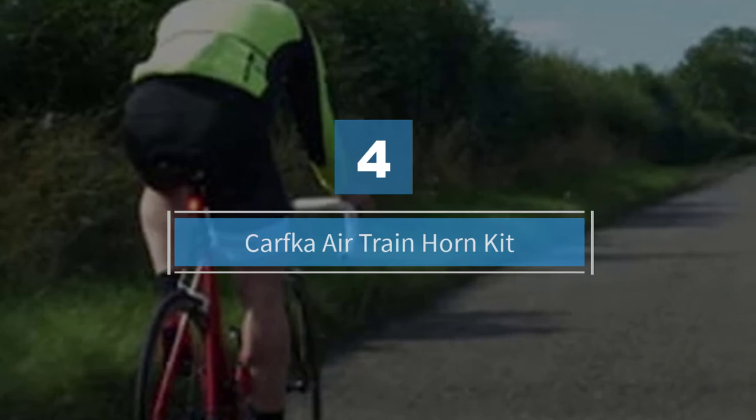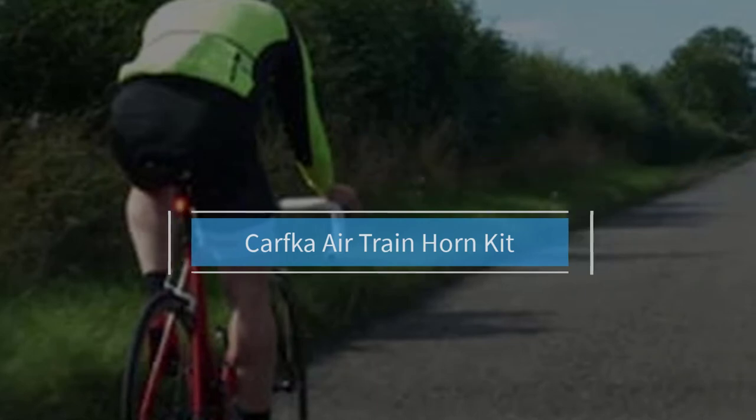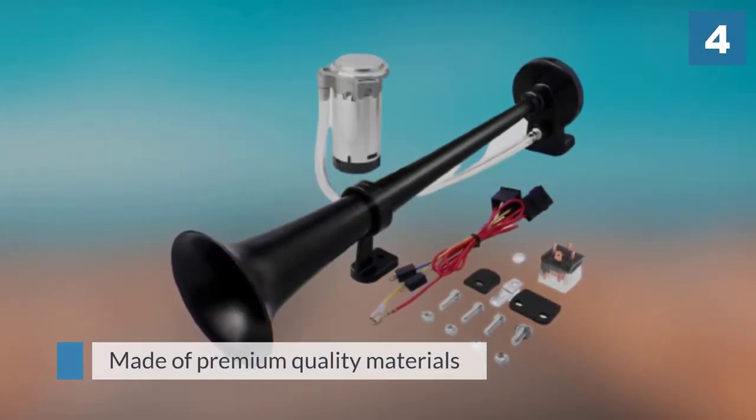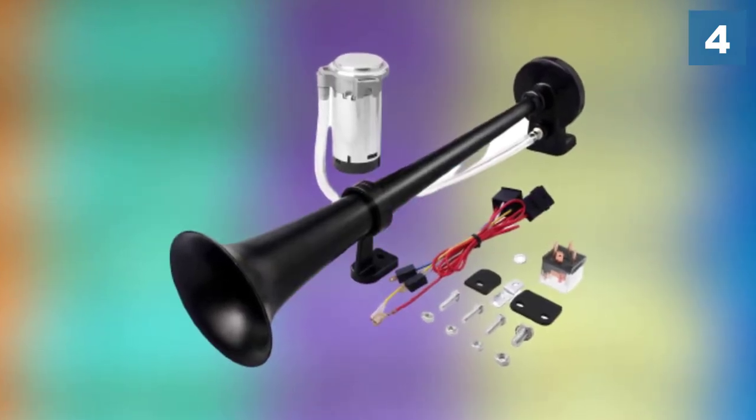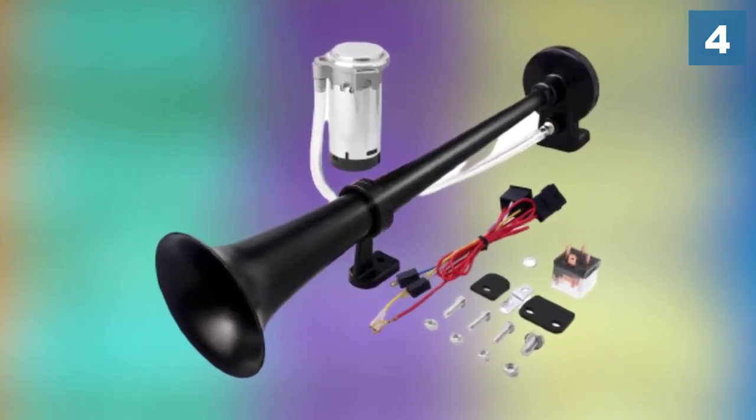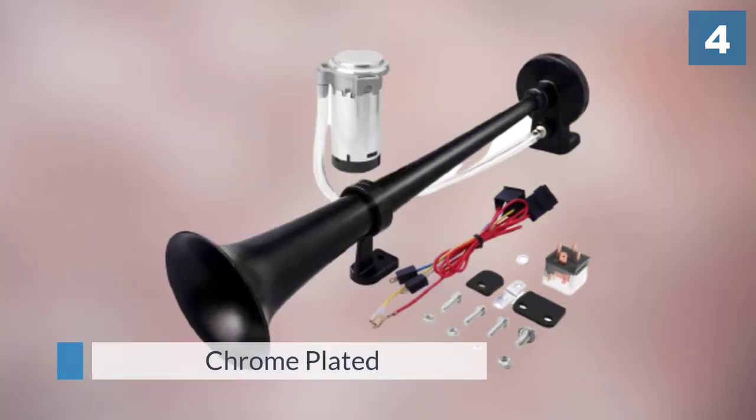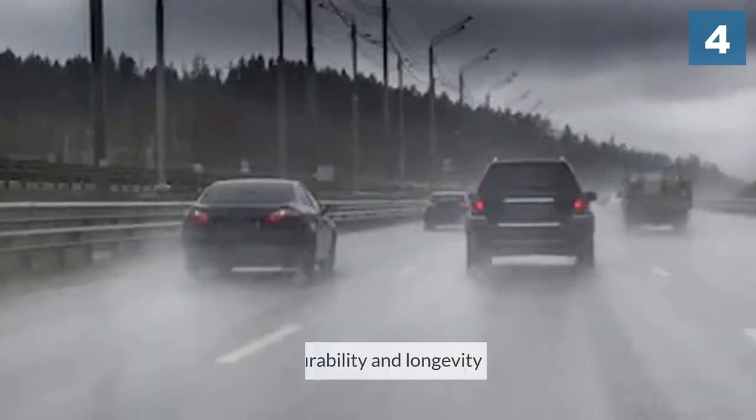Number four: Karfka air train horn kit. The Karfka 12 volts 150 decibels air horn kit might be loved by you as it is made of premium quality materials. Most importantly, it is chrome plated and made by using zinc material. All in all, upon using this air horn kit you will for sure be given extensive and immense durability and longevity.